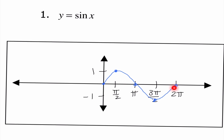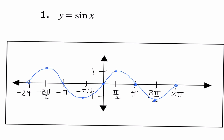As soon as we hit 2 pi, the graph starts again — it continues on both sides. Going to the negative x-axis, we can predict values: -1, 0, 1, 0. We notice that from 0 to 2 pi is one period of the graph, and the section to the left is the second period. This graph continues again and again and again.